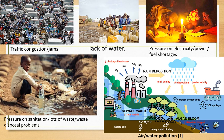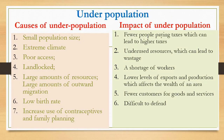Further impacts of over population include traffic congestion, pressure on sanitation, water and waste disposal problems, pressure on electricity supply, fuel shortages and power failures, lack of water for communities, and high numbers of people also affecting the environment — leading to air and water pollution.